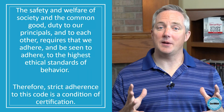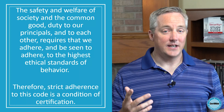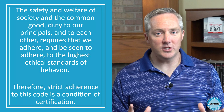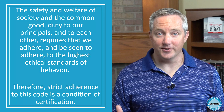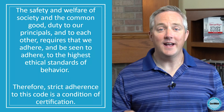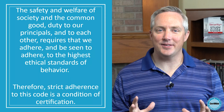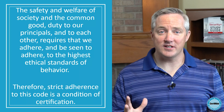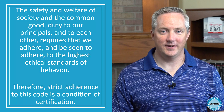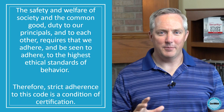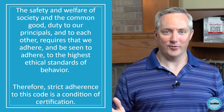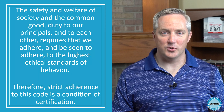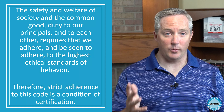The code begins with a preamble that describes the purpose of the code. It reads: the safety and welfare of society and the common good, duty to our principles and to each other, requires that we adhere and be seen to adhere to the highest ethical standards of behavior. Therefore, strict adherence to this code is a condition of certification. That preamble is important, but there's not a whole lot in it that you need to know for the exam. It's basically saying that ethics are important and that certified individuals must comply with the ISC Squared Code of Ethics.